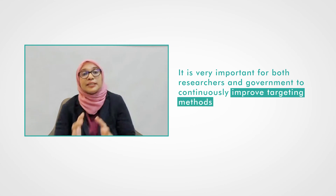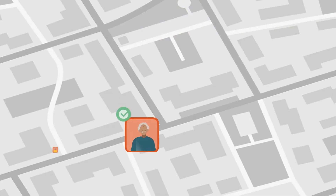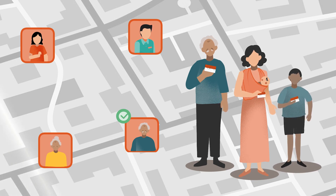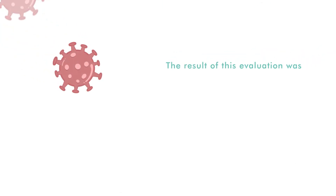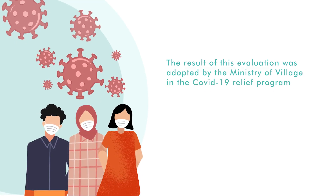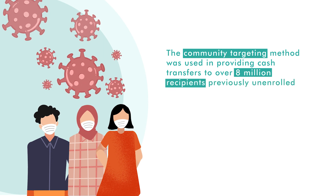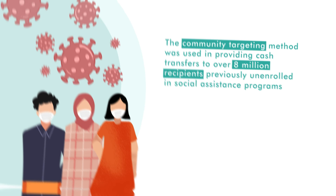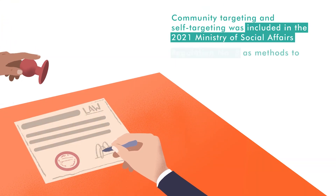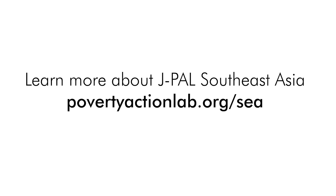Looking at the significance of targeting, it is very important for both researchers and governments to continuously improve targeting methods. This evidence from randomized evaluations provides important insights on how to effectively identify the poorest households that need assistance and make sure resources are correctly distributed. Fast forward to 2020: the results of this evaluation were adopted by the Ministry of Village in the COVID-19 Relief Program, which used the community targeting method to provide cash transfers to over 8 million recipients previously unenrolled in social assistance programs.